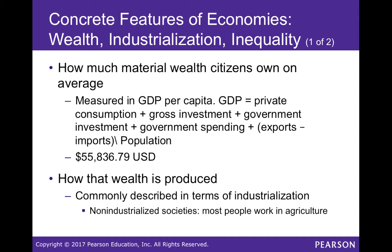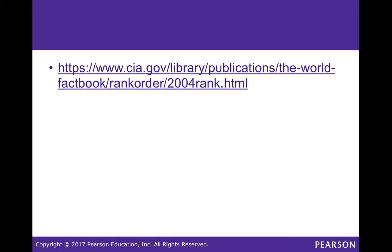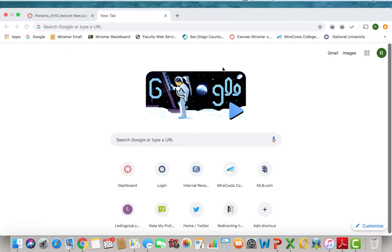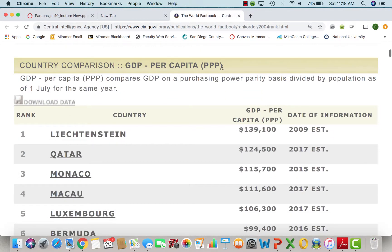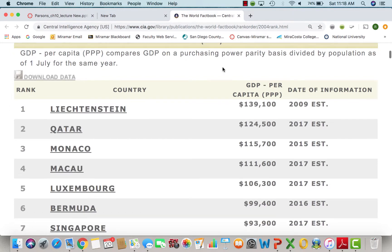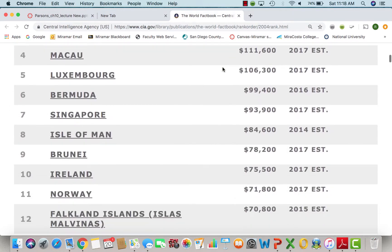The U.S. GDP per capita is about $55,000 per person. Wealth production comes largely from industrialization and technology. The CIA World Factbook link shows GDP rankings across countries, from highest to lowest.